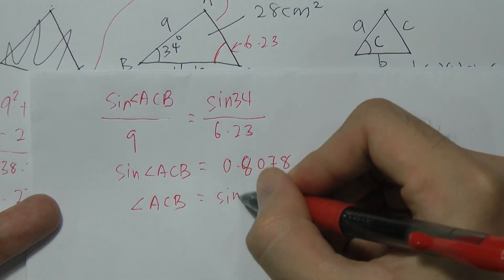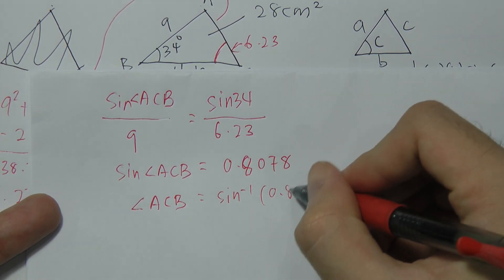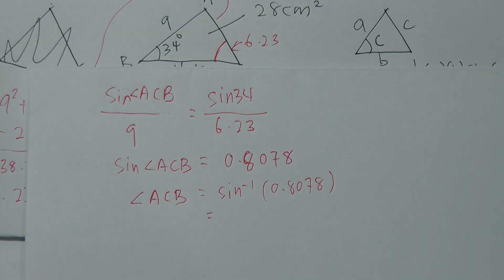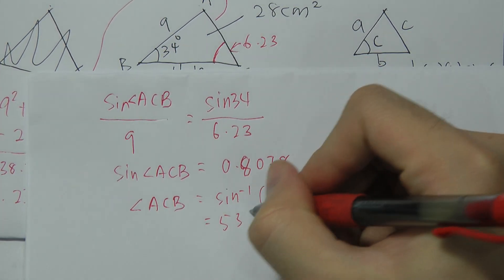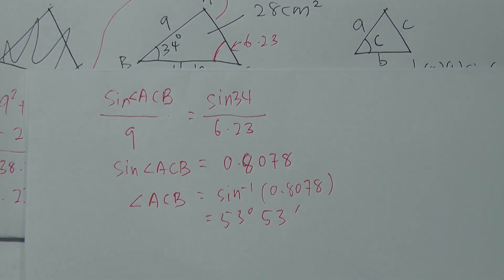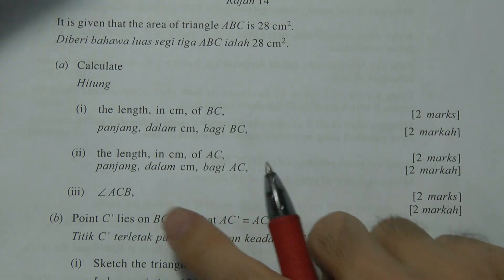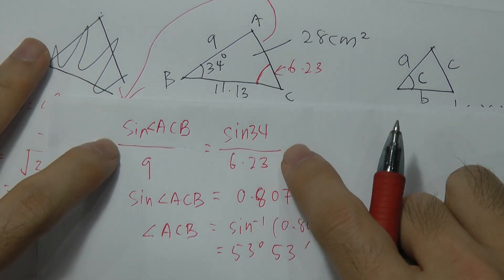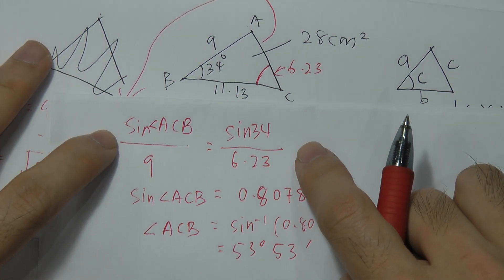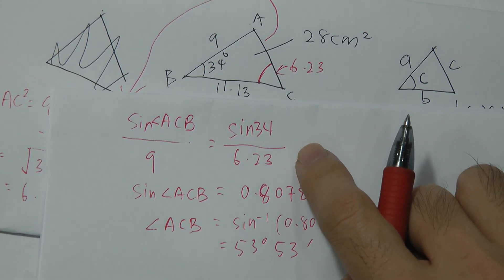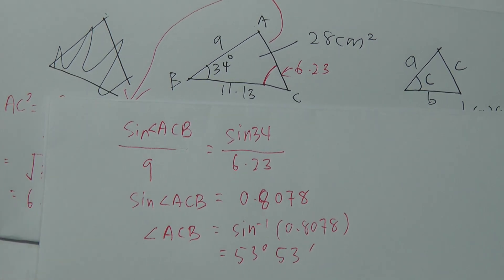To get angle ACB from sin(ACB) = 0.8078, I use inverse sine: shift + sin(0.8078), and I get angle ACB = 53°. So the angle ACB is 53°. This uses the sine rule and cosine rule along with the area formula, all of which are given in the formula sheet.